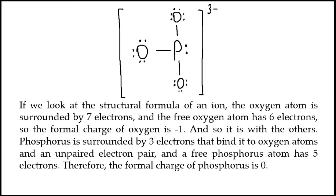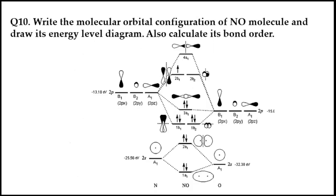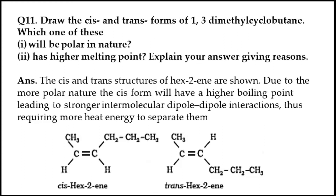We can see that a formula has been given and we need to make our resonance structure — showing all the things in a proper structure. One question asks about the molecular orbital configuration of NO molecules. We can tell this in the energy level diagram, which is calculated by bond order. This diagram is made. Whatever elements you have been asked about will be made — if you have been asked about nitrogen, then it will be made.